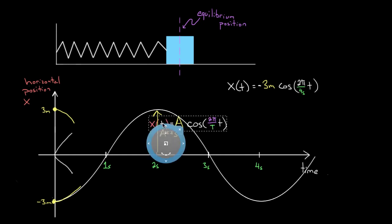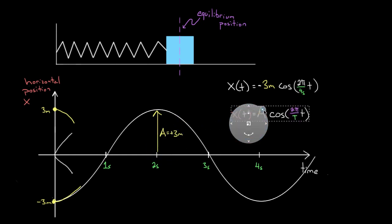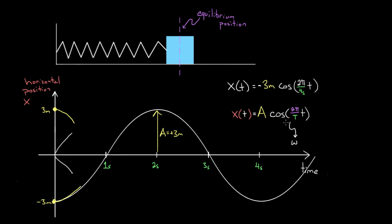Recapping: you can use this equation to represent the motion of a simple harmonic oscillator, which is always going to be plus or minus the amplitude times either sine or cosine of two pi over the period times the time. This two pi over the period represents the angular frequency or angular velocity. Choose positive cosine if you start at a max, negative cosine if you start at a min, positive sine if you start at equilibrium and go up, and negative sine if you start at equilibrium and go down.